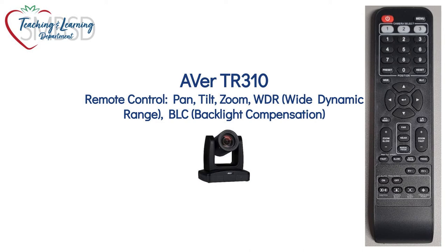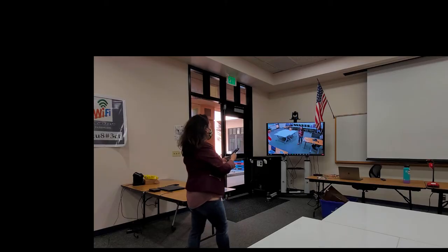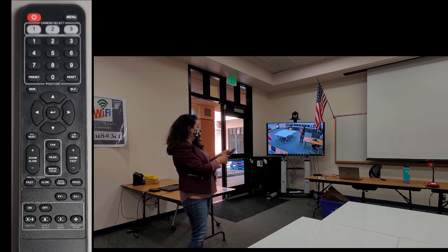Aver TR310 — we're going to look at the remote and focus on pan, tilt, zoom, wide dynamic range, and backlight compensation. Here's where you can find these buttons: intuitively, the pan and tilt arrows are in the center of your remote. Zoom in and out for slow and fast zoom are below the arrows, and right above the tilt-up arrow you'll find the wide dynamic range button and the backlight compensation button.